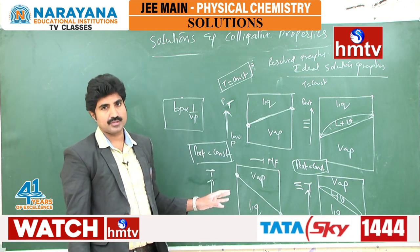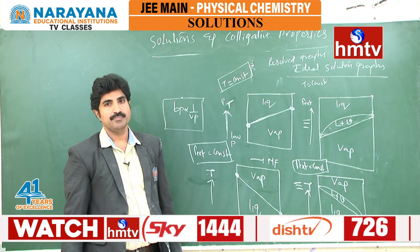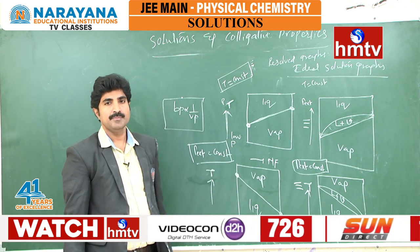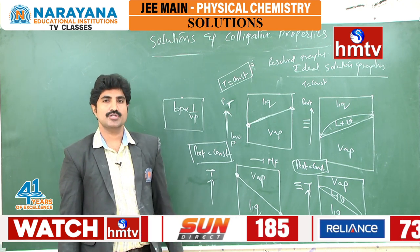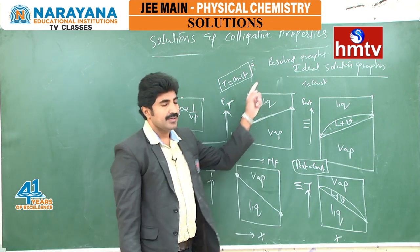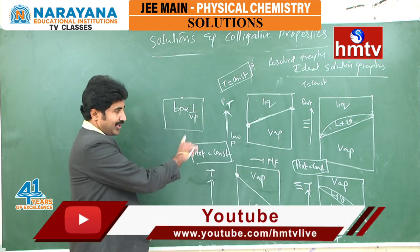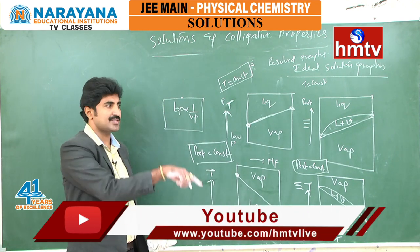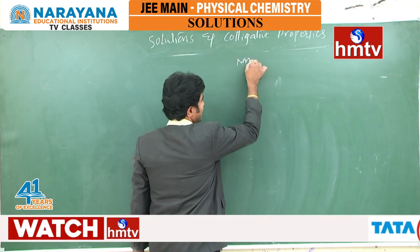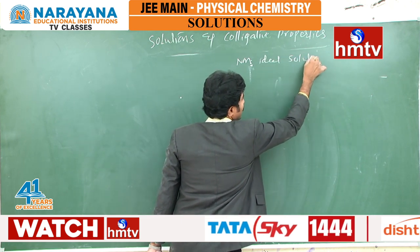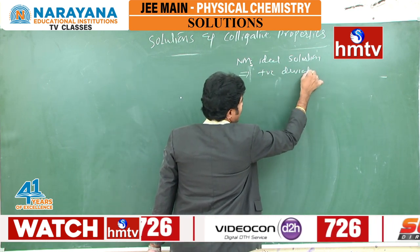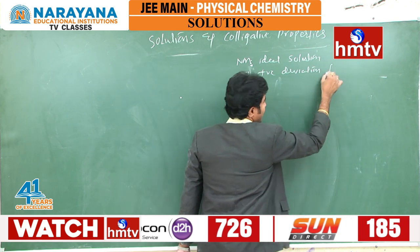Like ideal solutions, in non-ideal solutions — both positive and negative deviation — in every case four graphs come. So ideal solution gives four graphs, non-ideal positive deviation gives four graphs, and non-ideal negative deviation gives four graphs. Now see the non-ideal solution positive deviation graphs.